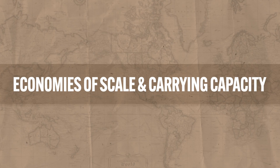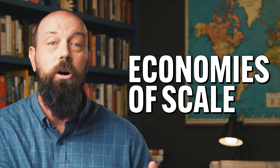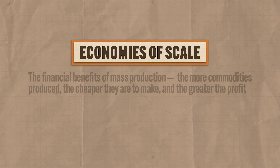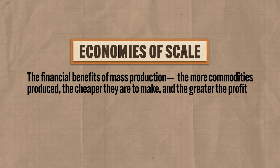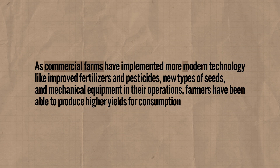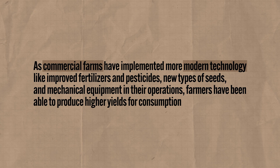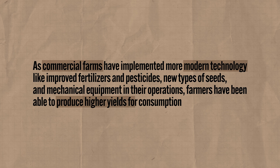McDonald's, of course, is just one illustration of a much larger trend — namely large corporations using economies of scale in order to maximize profits to the detriment of small businesses. Economies of scale refer to the financial benefits of mass production: the more commodities produced, the cheaper they are to make and the greater the profit. And on the flip side, the more commodities produced, the more is available for consumers who will pay less for them. As commercial farms have implemented more modern technology — like improved fertilizers, pesticides, new types of seeds, and mechanical equipment — farmers have been able to produce higher yields for consumption, meaning their cost has decreased while their profit has increased significantly.